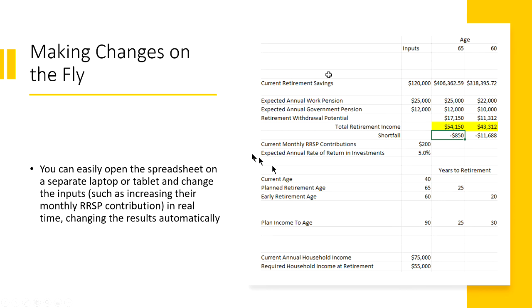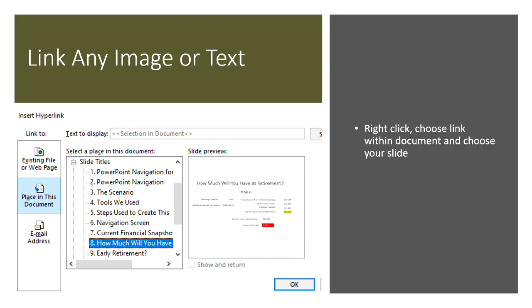You can easily open that spreadsheet on a separate laptop or tablet and change the inputs on the fly. If you say, what if you could pay $300 a month in RSP contributions, someone can enter that and it will automatically update on the PowerPoint as well. Or if their annual work pension would be higher, or if they wanted to retire at age 55 — you can run those calculations as long as you've set it up for it. With a separate tablet, you can start putting in the client's inputs and their presentation updates automatically.